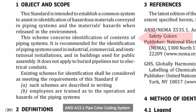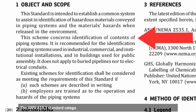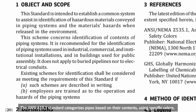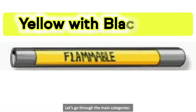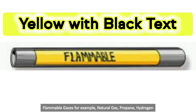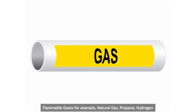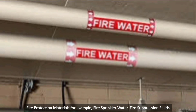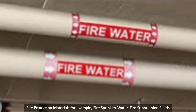The ANSI A13.1 Standard categorizes pipes based on their contents using specific colors. Yellow with black text indicates flammable gases — for example, natural gas, propane, hydrogen. Red with white text indicates fire protection materials — for example, fire sprinkler water and fire suppression fluids.